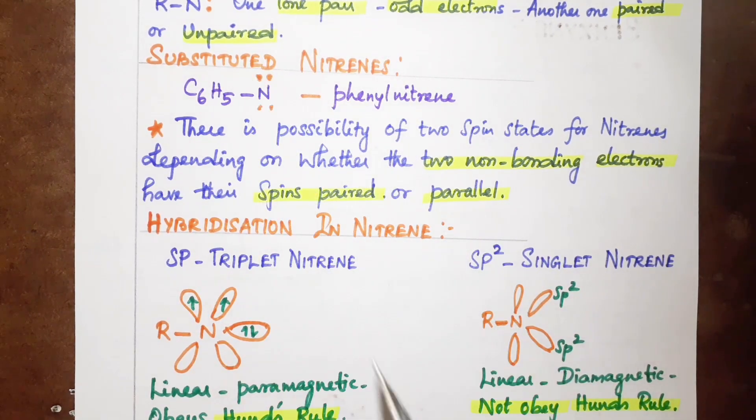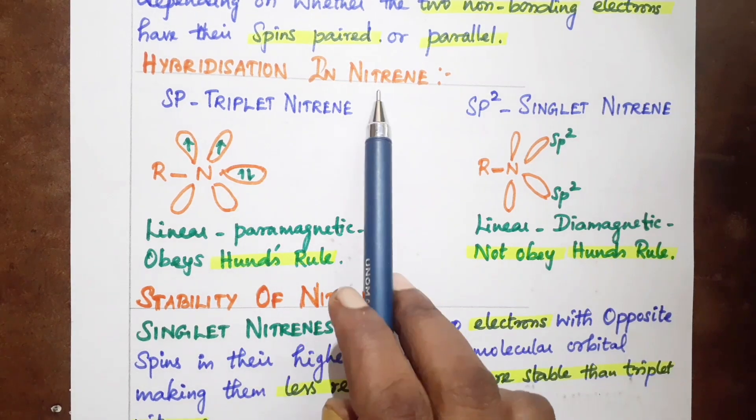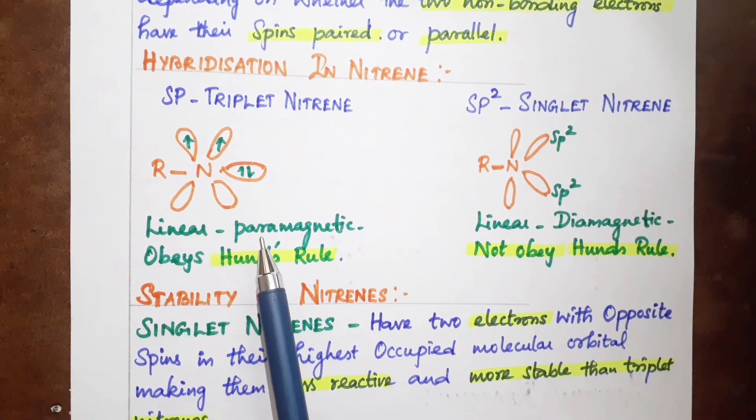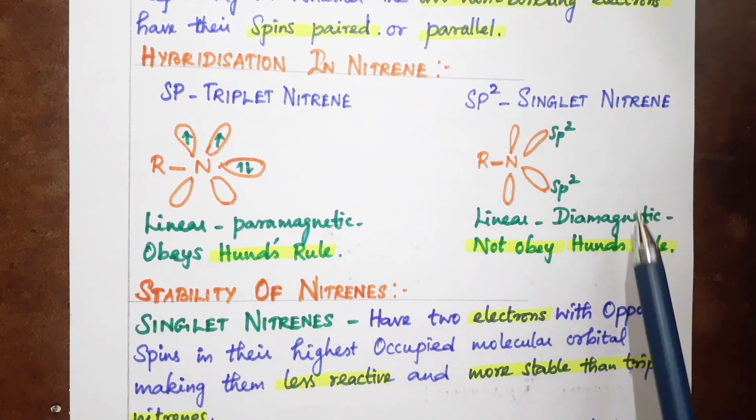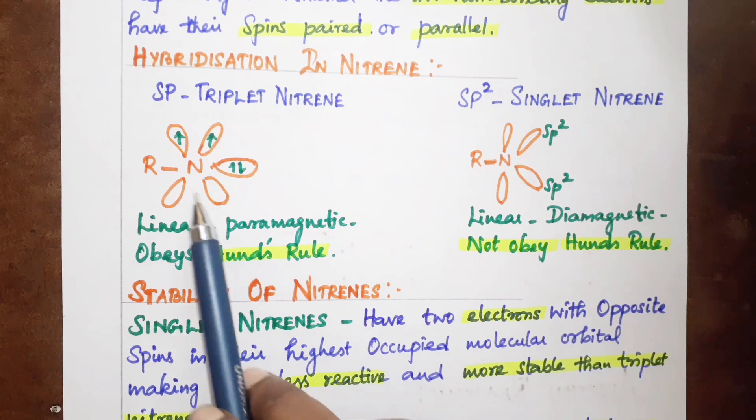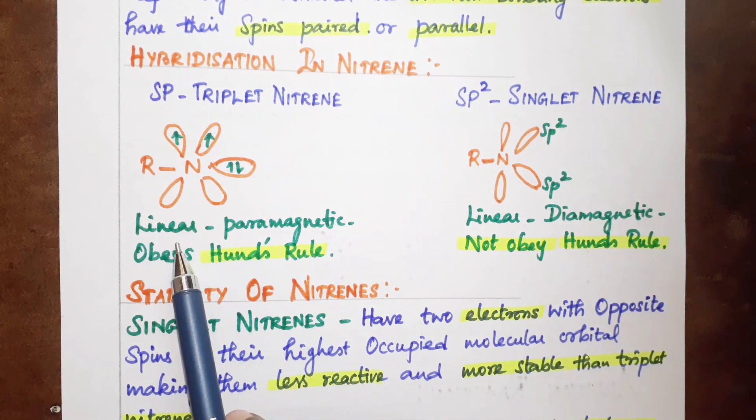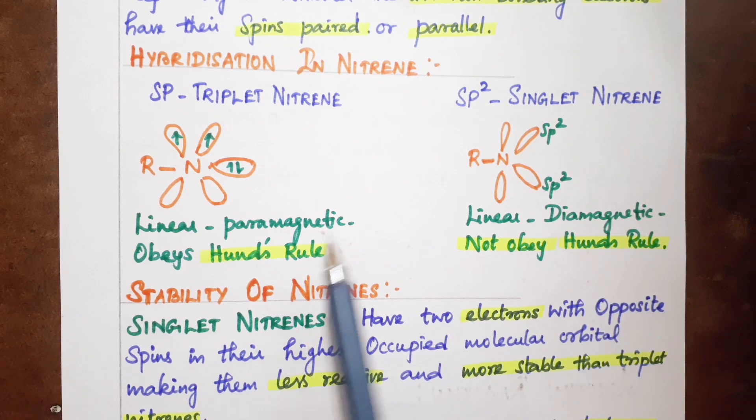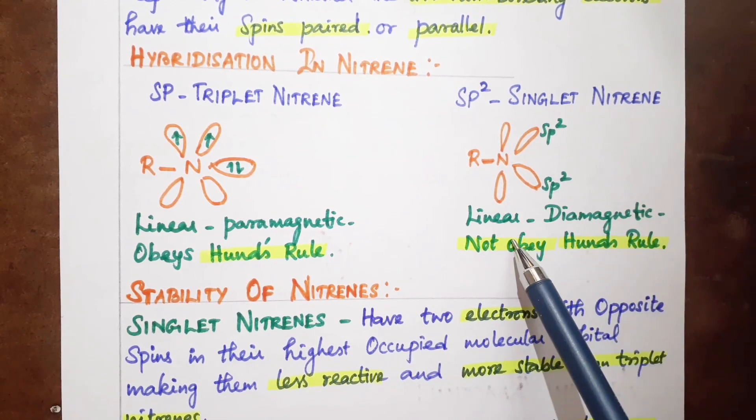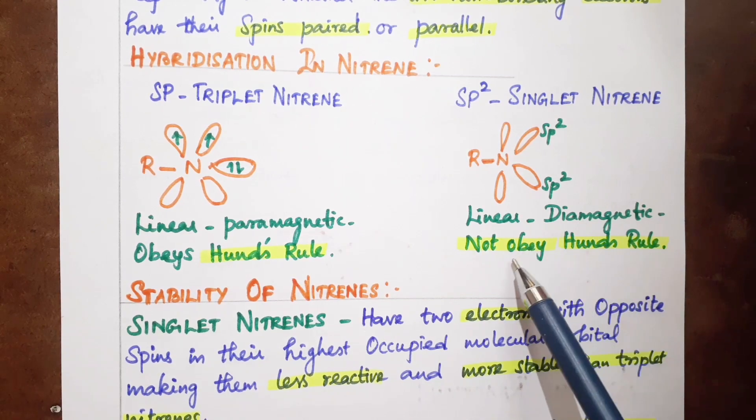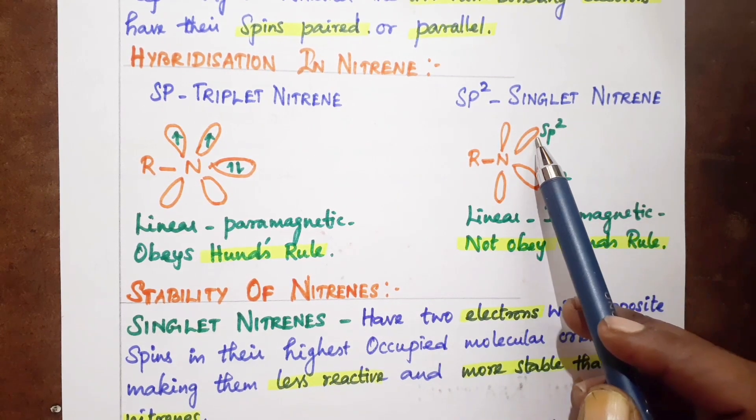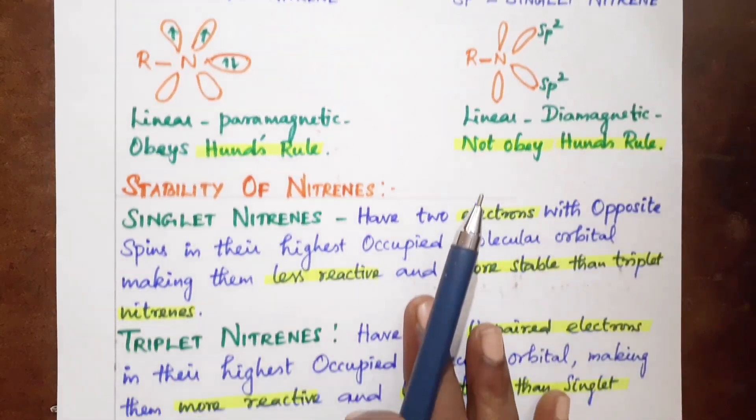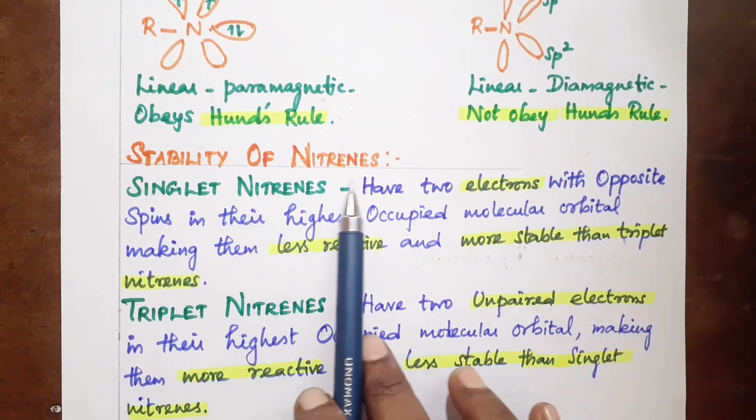Hybridization in nitrenes: sp-triplet nitrene and sp2-singlet nitrene. Triplet nitrene has two electrons forming a linear, paramagnetic structure that obeys Hund's rule. Singlet nitrenes are linear molecules, diamagnetic, and do not obey Hund's rule with sp2 hybridization.